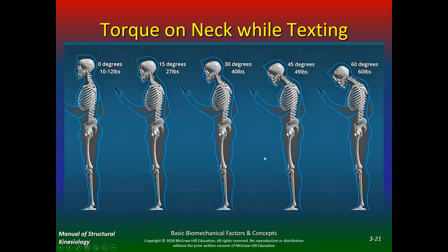Understanding these biomechanical principles explains why you have certain problems. When you look at certain postures, you'll recognize: I'm not at a mechanical advantage — that's why I have low back pain, that's why I have shoulder pain. If you don't have really good alignment, your levers can't work as well.